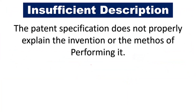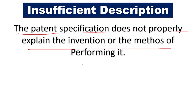The next ground is insufficient description — the patent specification does not properly explain the invention or the methods of performing it. If you have not clearly mentioned how it works, or in what way or by what method a product needs to be used, then that will also be eligible for pre-grant opposition. If you don't have a correct description or any method by which you perform it, you can face pre-grant opposition on these issues.